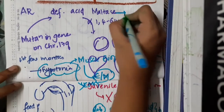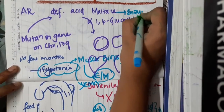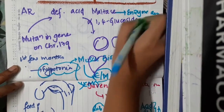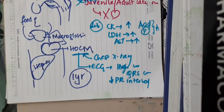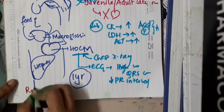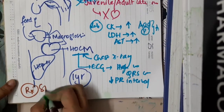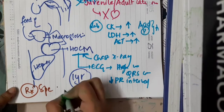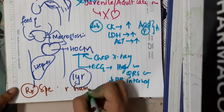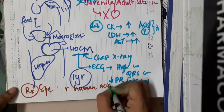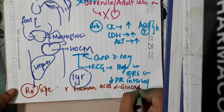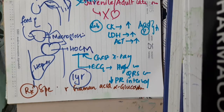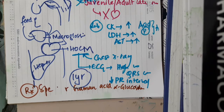The definitive diagnosis is by enzyme assay of acid maltase. The treatment of this condition is mainly by giving specific enzyme replacement therapy — recombinant human acid alpha-glucosidase — which is available for these patients. That is about Pompe disease.